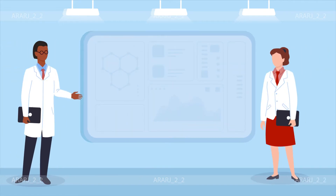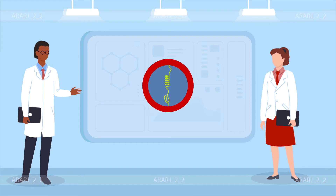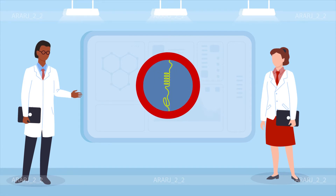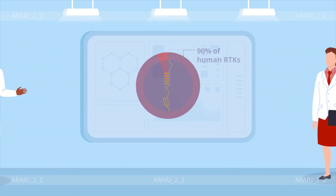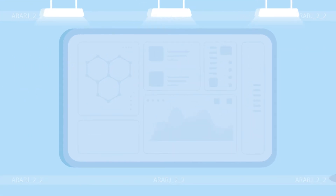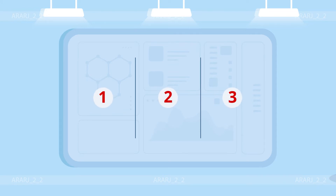Against this backdrop, a team of researchers from the University of Helsinki adopted a systematic approach to map the RTK-protein interactions of 90% of human RTKs. To do this, they combined three complementary techniques.